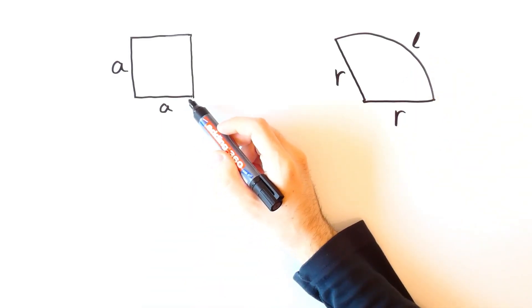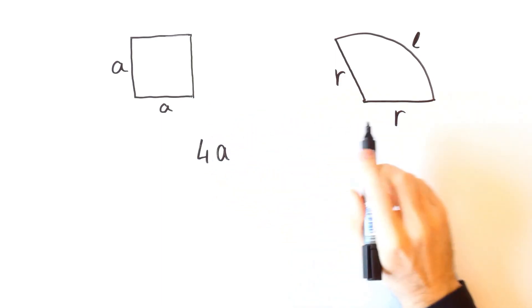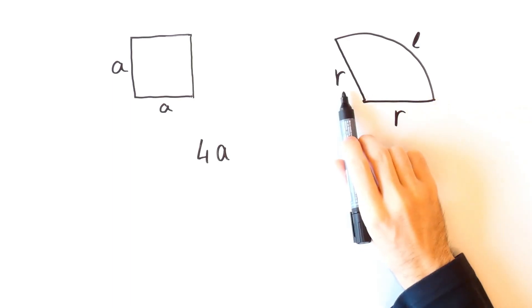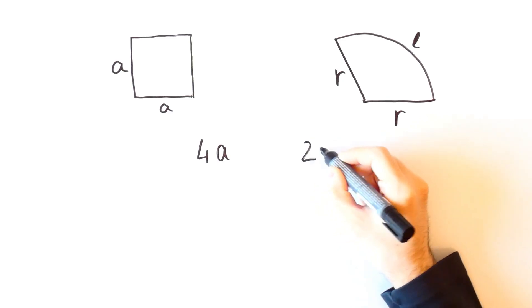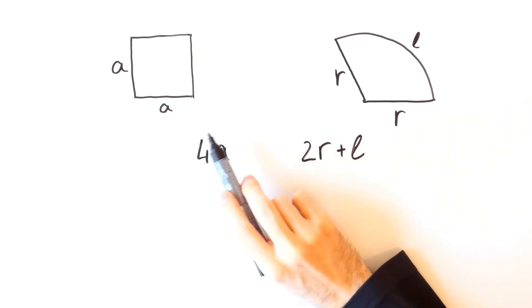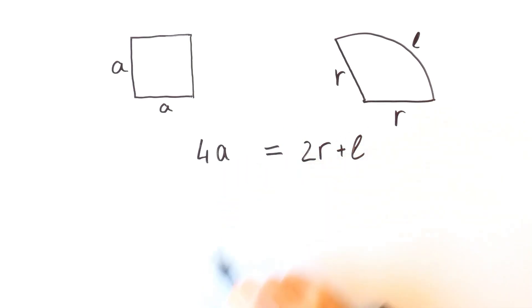Now the perimeter of the square is equal to 4 times A and the perimeter of the sector is equal to R plus R plus L which is equal to 2R plus L. Since the perimeters are equal, then 4A is equal to 2R plus L.